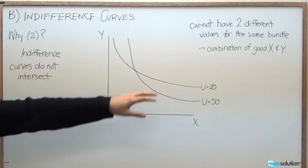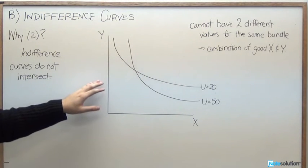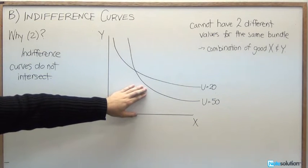That's to say, we can't have two different values for the same bundle. A particular combination of good X and good Y has to only give us one utility.